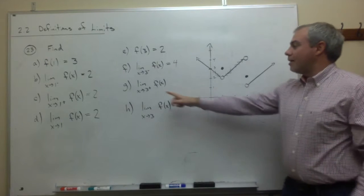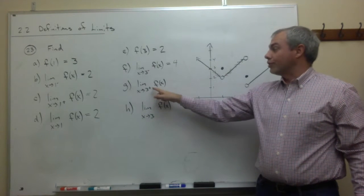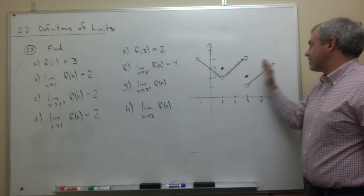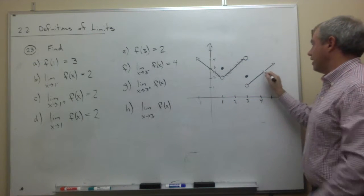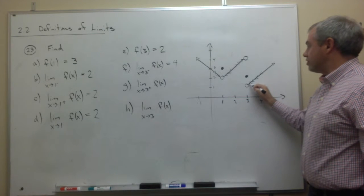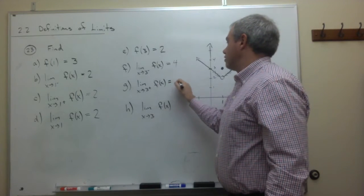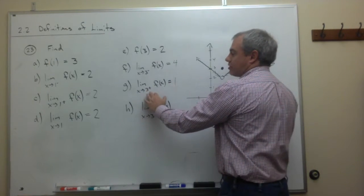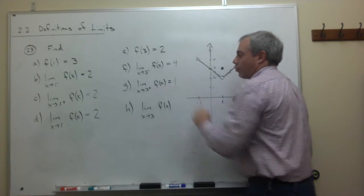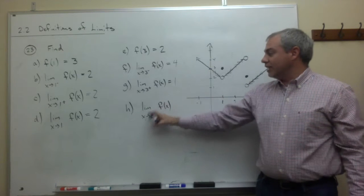As I come at the point x = 3 from the positive side — the right-hand limit — I'm coming from the right getting closer and closer to 3. The y-value I'm approaching is 1, so the limit as x goes to 3 from the right of f(x) is 1.